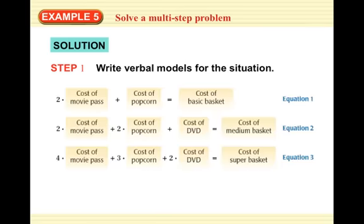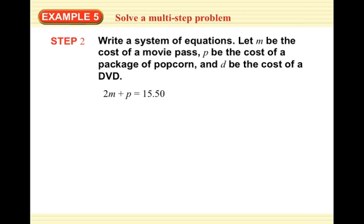Let's do verbal models. If you look here, they counted the number of movie passes, and the number of popcorns, and the number of DVDs in each of the different baskets. They've got 2 times a movie pass plus the cost of popcorn equals the cost of the basic basket, 2 times the cost of a movie pass plus 2 times the cost of popcorn plus the cost of DVD equals the cost of a medium basket, 4 times the cost of the movie pass plus 3 times the cost of popcorn plus 2 times the cost of DVD equals the cost of the super basket. Now instead of having words, we just need variables to represent the cost of the various things. And in the case of the total basket cost, we can actually plug in a number.